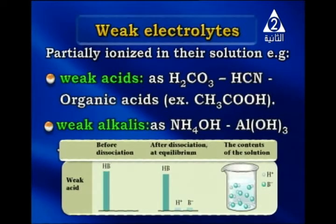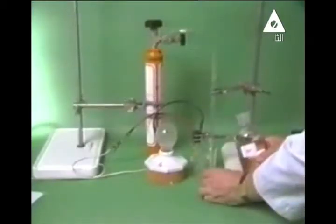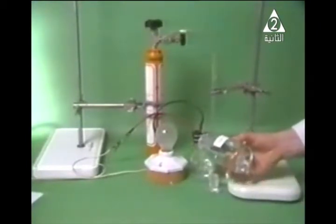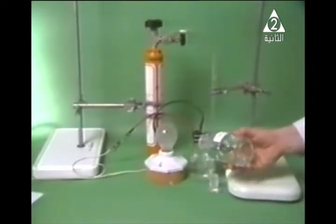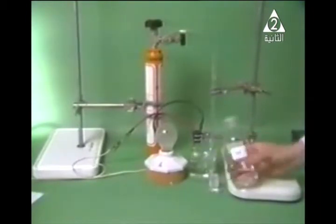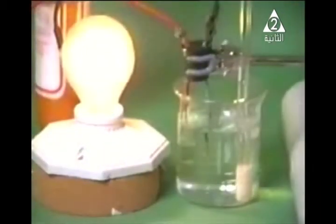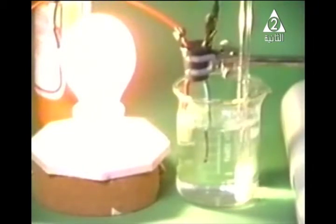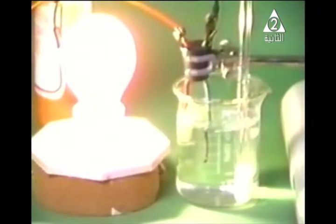As the following animation will show: if we dissolve hydrogen chloride gas in water in a beaker, we find that it ionizes completely into hydrogen ions and chloride ions, and the hydrogen ions combine with water forming hydronium ions. The ions produced make the conduction of electricity very good, so the lamp lights brightly — therefore it is a strong electrolyte.